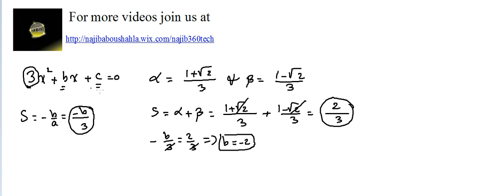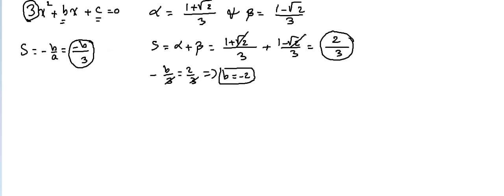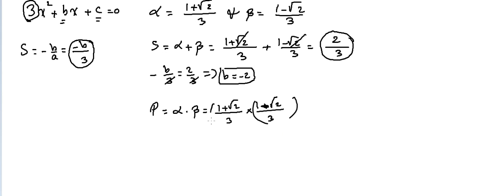We found B; now let's find C using the product of the roots. The product alpha times beta equals (1 + √2)/3 times (1 − √2)/3. The denominator is 3 times 3 equals 9. The numerator is a difference of squares: 1 squared minus (√2) squared equals 1 minus 2, giving minus 1 over 9.